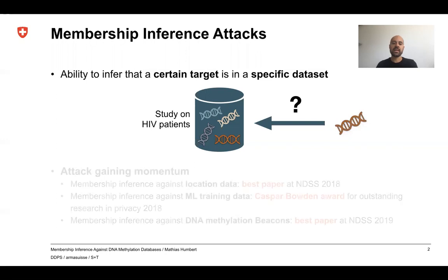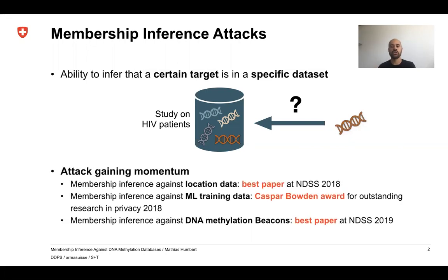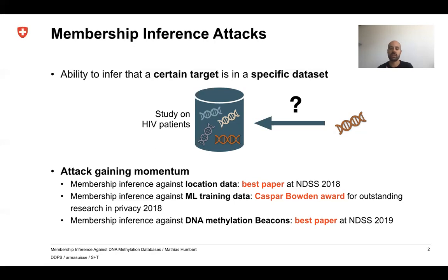This attack has gained a lot of momentum in research over the last few years, as shown by the various awards it has received. Membership inference attacks against location data got the best paper award at NDSS 2018. Membership inference attacks against machine learning got the Caspar Bowden award for outstanding research in privacy in 2018. And membership inference attacks against methylation beacons got the best paper at NDSS 2019.